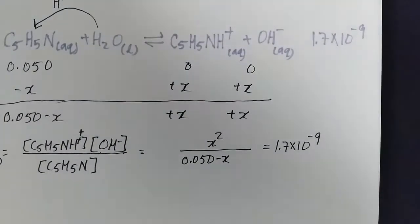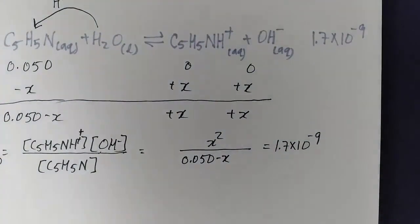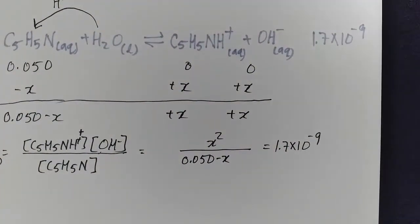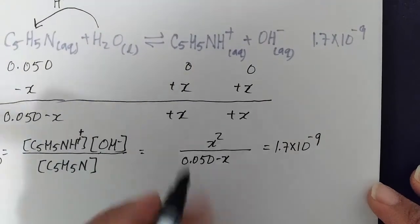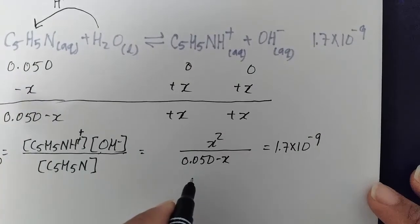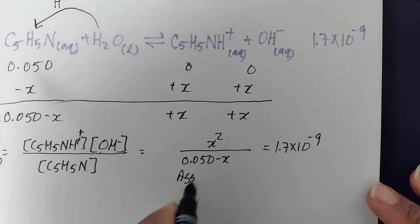You know, 10 to the minus 9 is a very, very small number. So we could be very safe in our assumption that this reaction is going to be small and going in the forward direction. So we'll assume X is small.